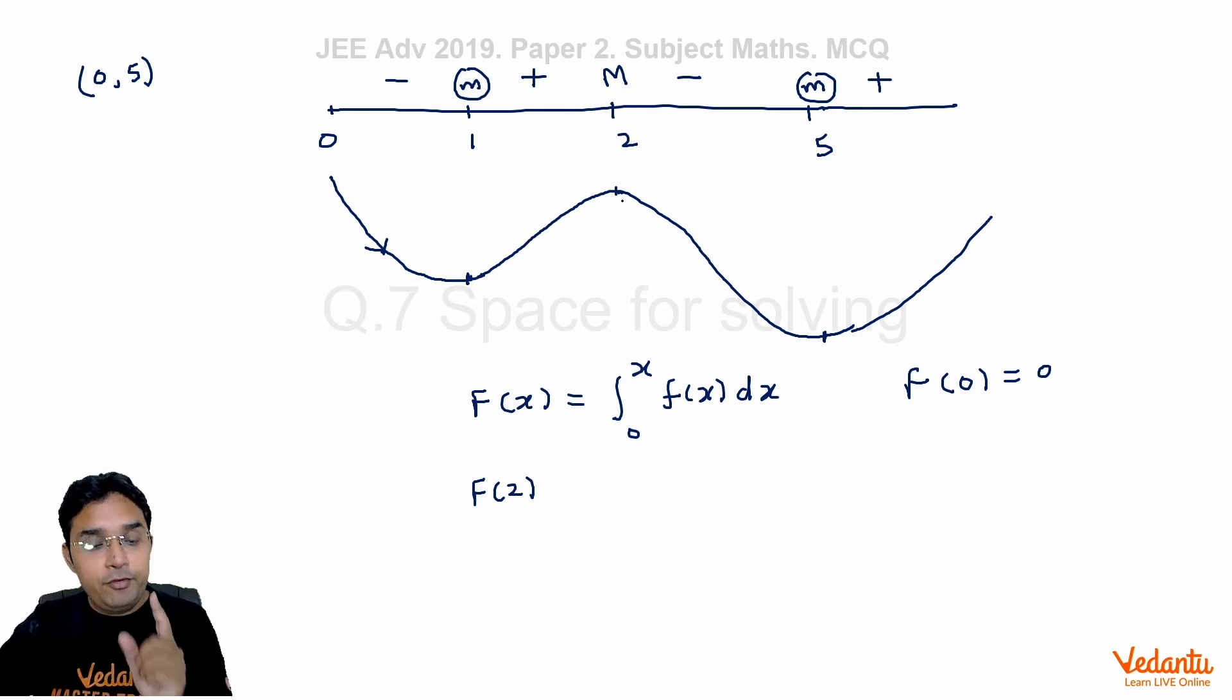If F(2) is positive, then definitely, because before it was negative, it will become zero at some time. But if F(2) is also negative, then this entire graph from 0 to 5 will be less than zero, so it will not become zero at any value of x from 0 to 5. So to find F(2), let us find this integral.